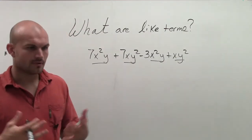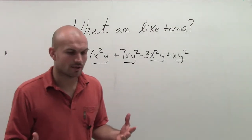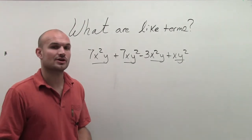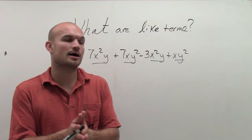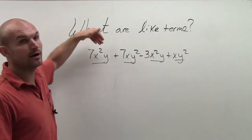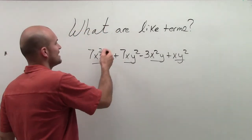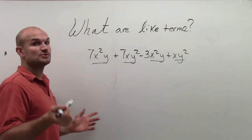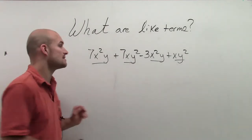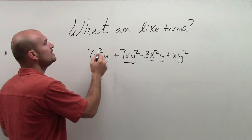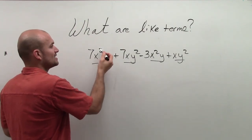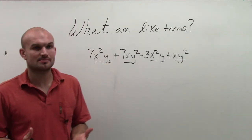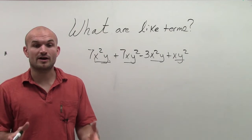Like terms are going to be your variable factors of your term. Now remember, factors are the numbers that multiply to give you your number. So here, I have 7 times x squared y. The factors are 7, which is my numeric coefficient, and my variable factors are x squared and y. Like terms are when you have the exact same variable factors.